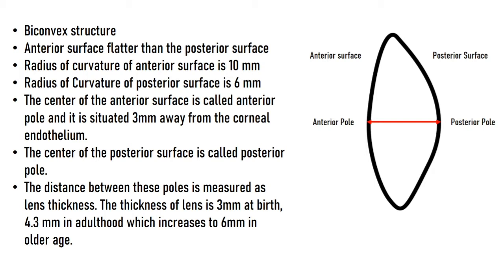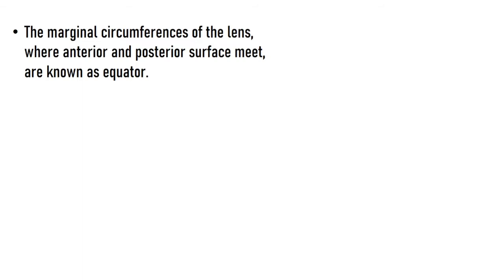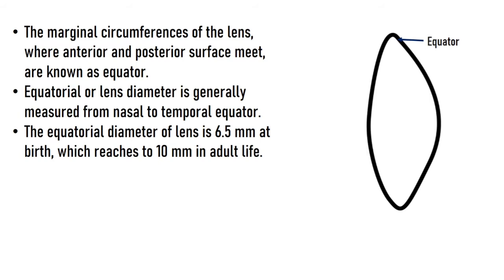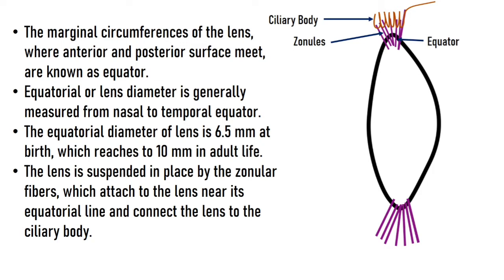Lens thickness can reach up to 6 millimeters in old age. The anterior and posterior surfaces of the lens meet at the equator, which is the 360-degree marginal circumference of the lens. The lens diameter, also known as equatorial diameter, is measured from the nasal to the temporal equator. It is about 6.5 millimeters at birth and reaches up to 10 millimeters in adulthood, but unlike thickness, the lens diameter remains constant throughout life.